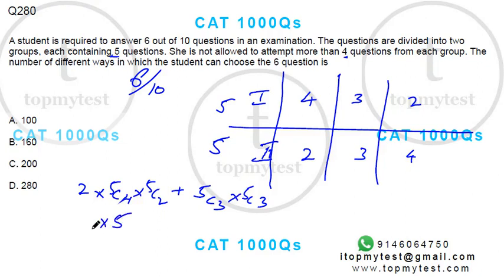5C4 is 5, 5C2 is 10. 5C3 is same as 5C2, which is 10 into 10. This will give you 100. This will also give you 100. 100 plus 100 is 200. Option C.